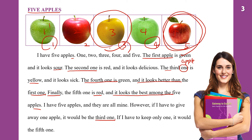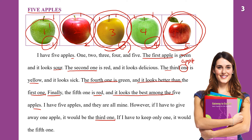One, two, three, four, five — this is cardinal. First, second, third, fourth, fifth — this is ordinal. So: the first apple, the second apple, the third apple, the fourth apple, and the fifth apple.